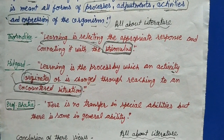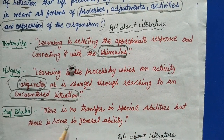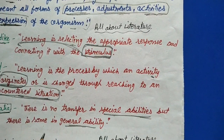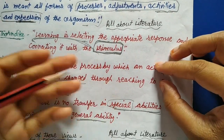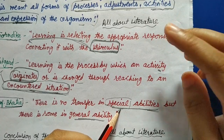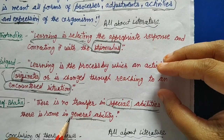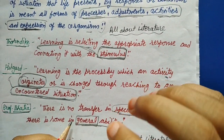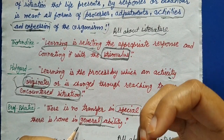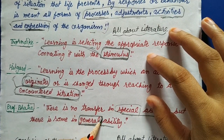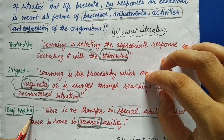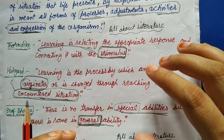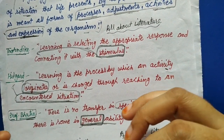Professor Bhatia is also important from your exam perspective. He says there is no transfer in special abilities, but there is transfer in general abilities. Bhatia gives two words: special and general. Special abilities are inborn — they are God-gifted and cannot be included in the learning process. But general abilities are common to every person; how they use those abilities in their life and how they succeed is what is learned and adopted. So remember: special abilities versus general abilities is Bhatia's key contribution.